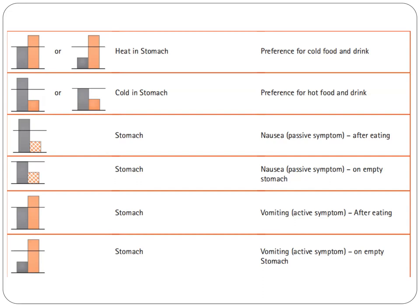Next: excess yin, deficient yang chi — the stomach has nausea as a passive symptom after eating. Next tower diagram: normal yin, deficient yang chi — the stomach has nausea as a passive symptom on an empty stomach.